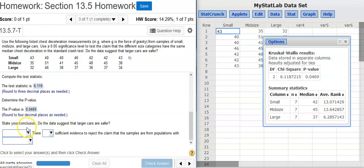And now, we're asked to state our conclusion and answer this question. Do the data suggest that larger cars are safer? Well, we're going to reject or fail to reject the null hypothesis.